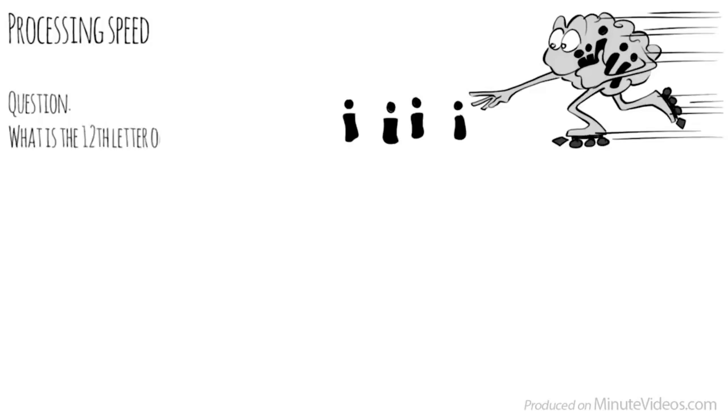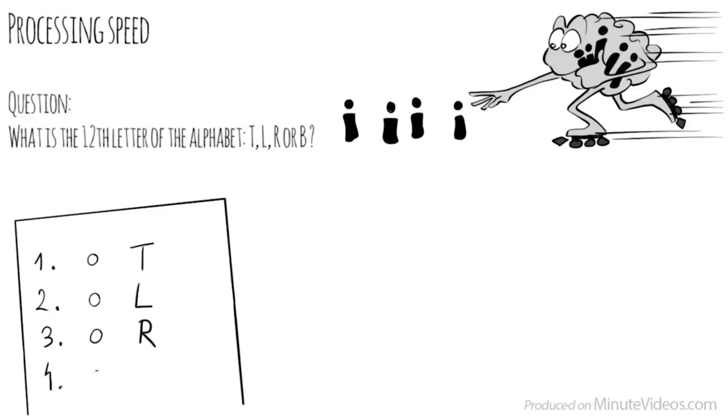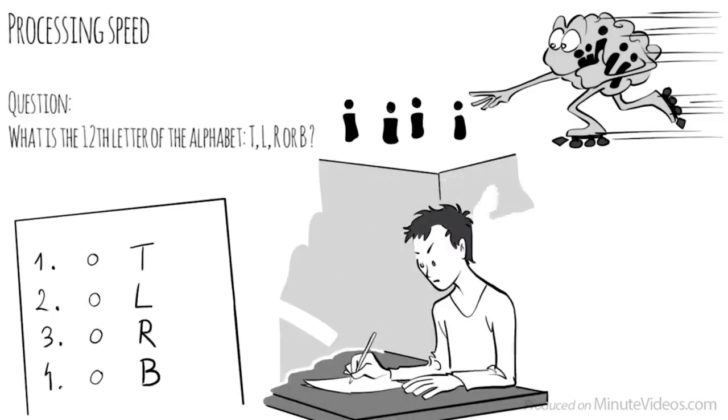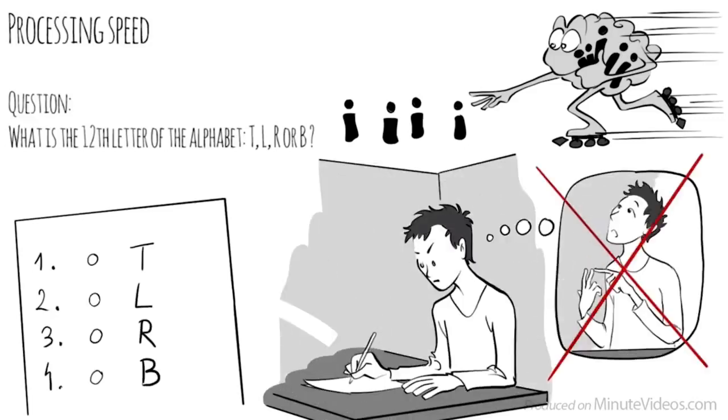The fourth section was about processing speed, the pace at which we take in new information and make sense of it in order to prepare a response. One of the questions asked was, what is the twelfth letter of the alphabet? Is it T, L, R, or B? I realized I had to rule out all the options that didn't look right. Counting would have taken way too long. L is the right answer.